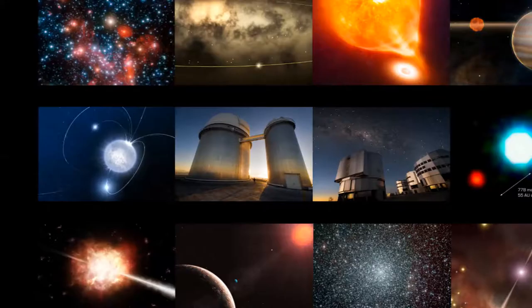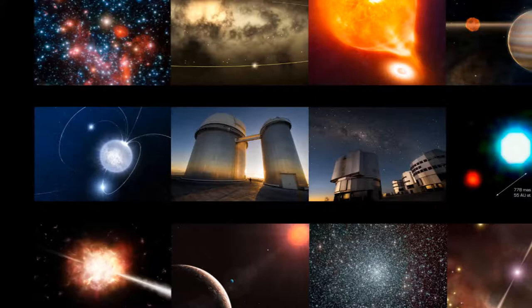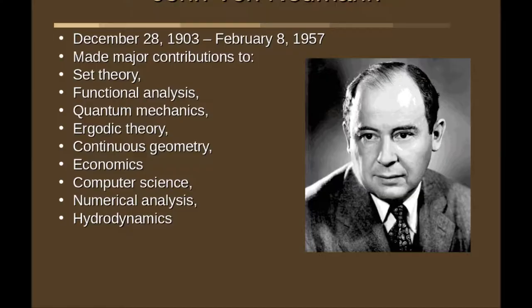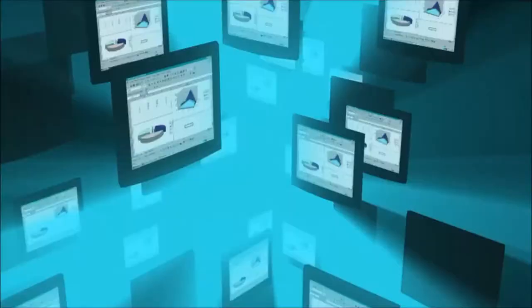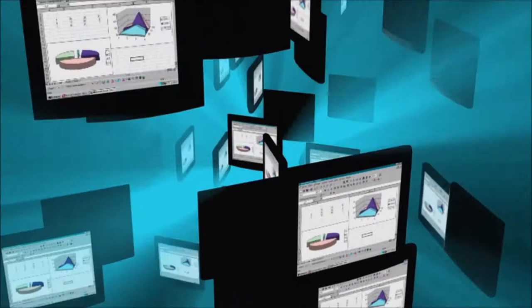John von Neumann, 1903 to 1957. John von Neumann was born János Neumann in Budapest a few years after the start of the 20th century - a well-timed birth for all of us, for he went on to design the architecture underlying nearly every single computer built on the planet today.